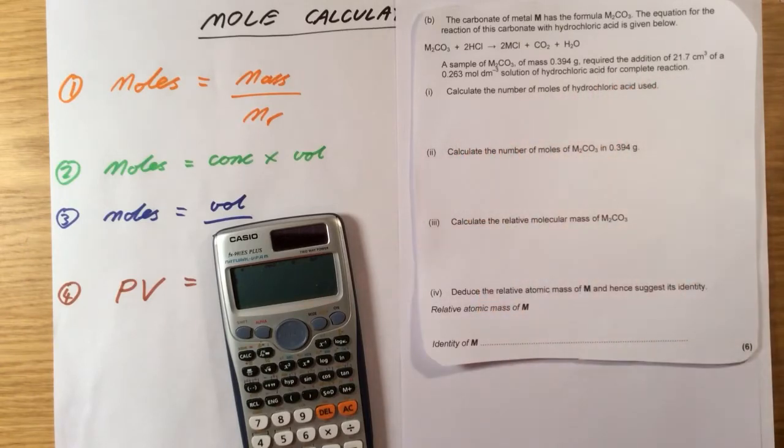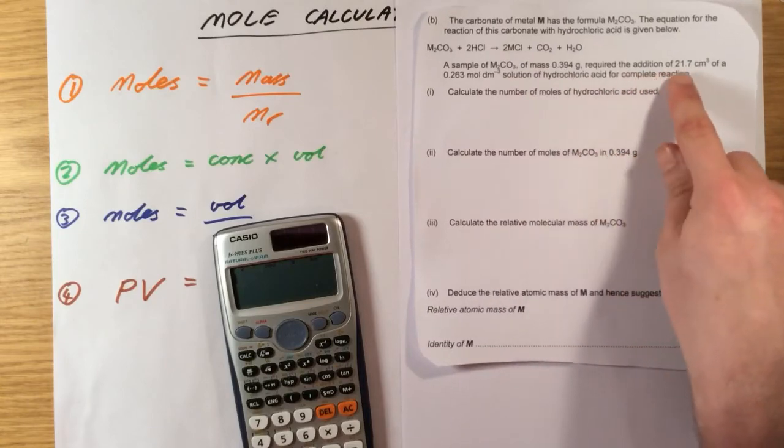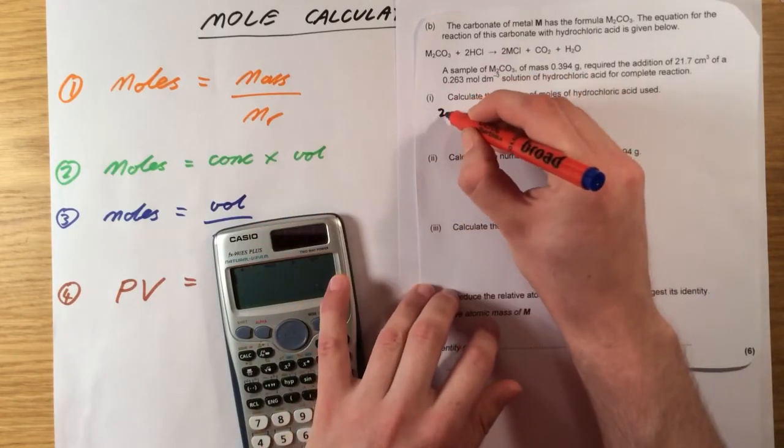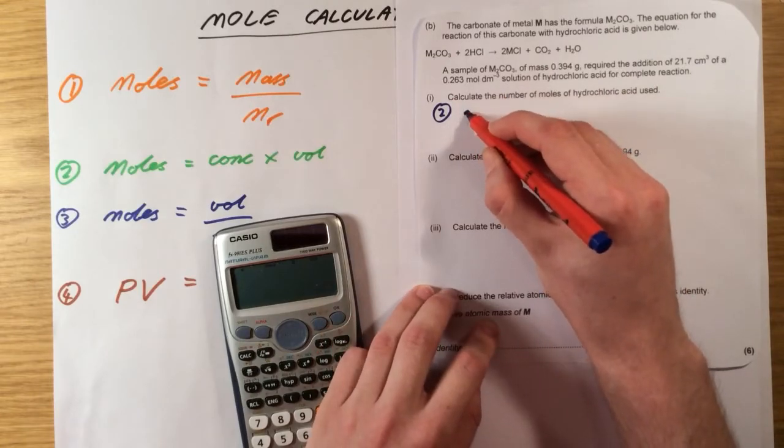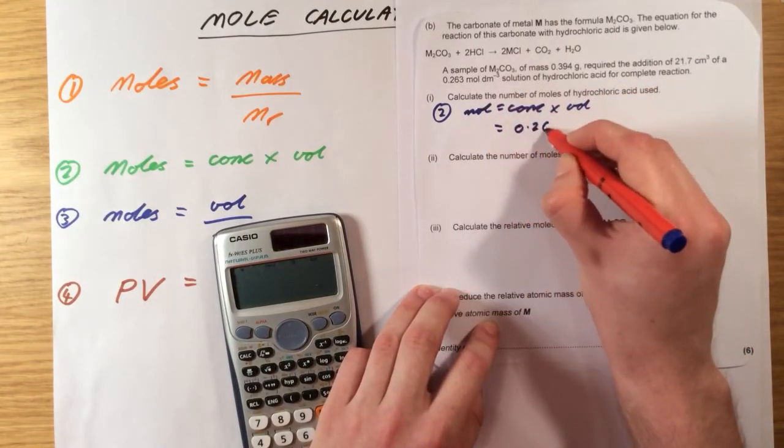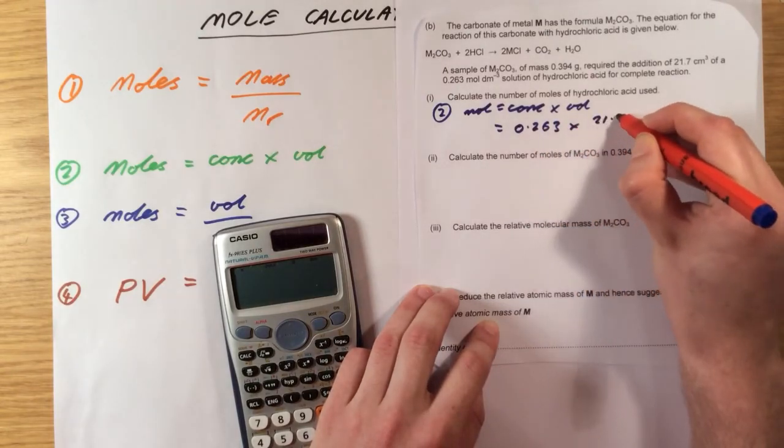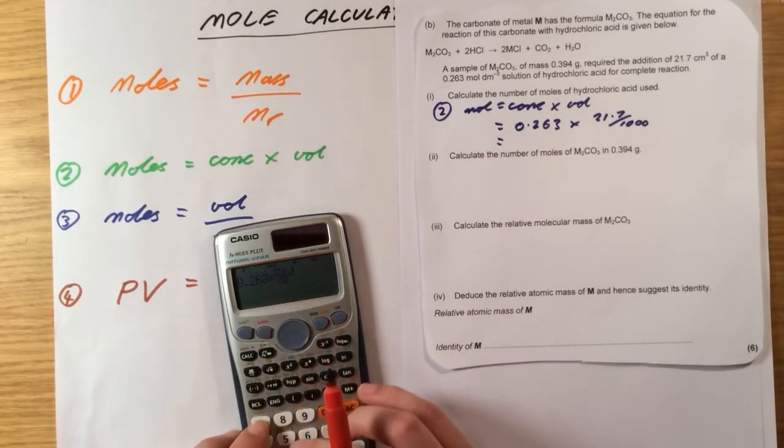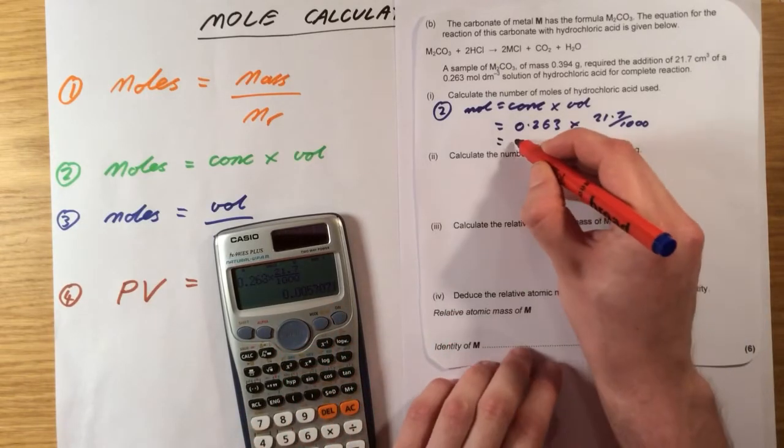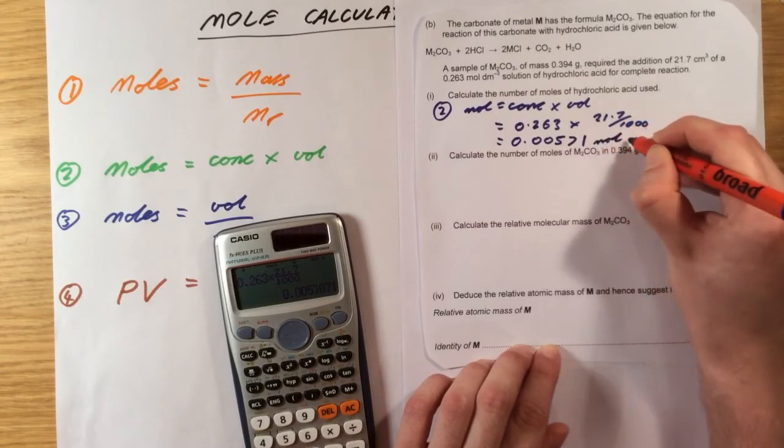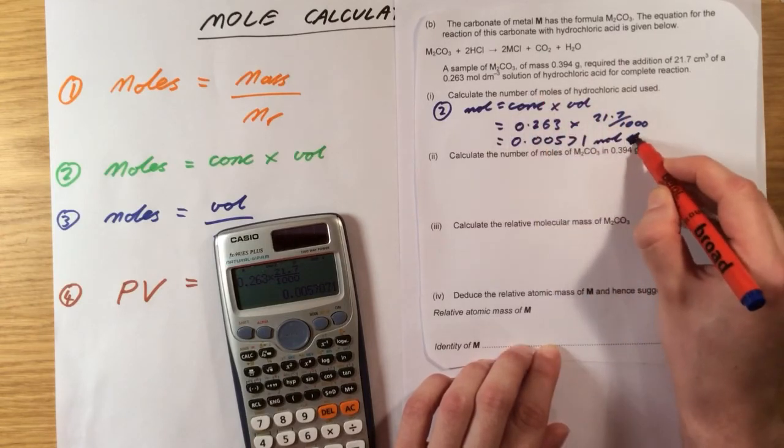One, calculate the number of moles of hydrochloric acid used. Okay. Number of moles of hydrochloric acid used. Okay, so my hydrochloric acid here has a volume of 21.7 centimeter cubed, a concentration of 0.263. So I'm going to be using equation number 2 here. Okay, so moles equals concentration times volume. Concentration 0.263. Volume 21.7 over 1000. Which is 0.263 times 21.7 over 1000, which is 0.00571 moles. Sorry, it's a number of moles. Just moles.